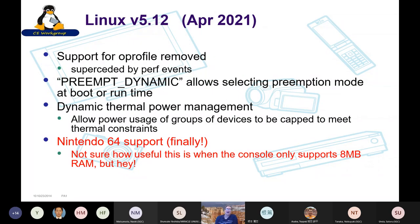Linux 5.12 came out in April 2021. OProfile was removed now that the perf system and perf events can do everything OProfile used to do. Also added was 'preempt_dynamic,' which allows selecting the preemption mode at boot time or even at runtime. There are several preemption levels from none to voluntary to full preemption, previously only controllable at compile time.